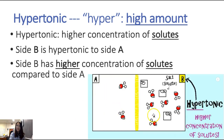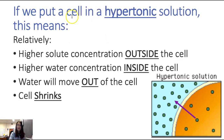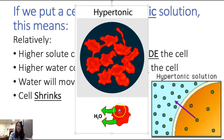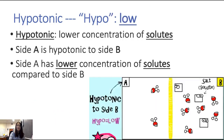If we put a cell in a hypertonic solution, draw the picture with the dots to show yourself the concentrations. In this case we have higher concentration of solute outside the cell in the solution and lower concentration of solute inside the cell, so water is going to move out of the cell. The result is the cell will shrink. This is what happens with a slug — if you put salt on a slug, the water comes out.